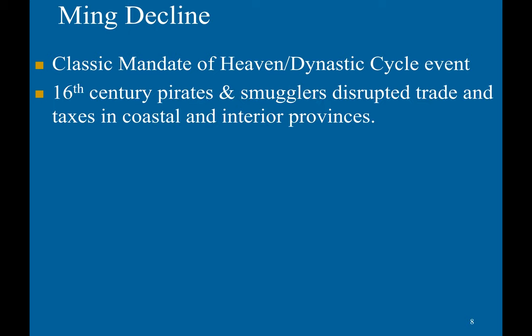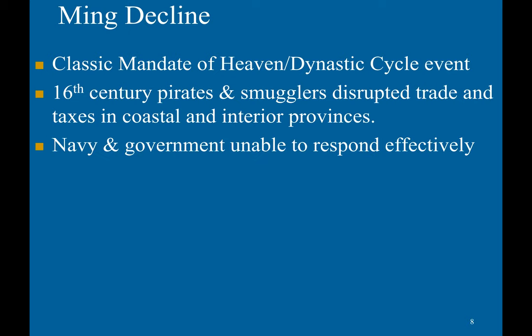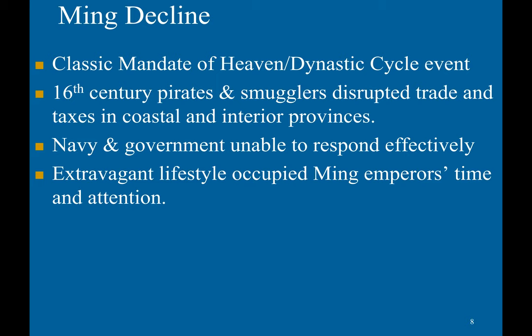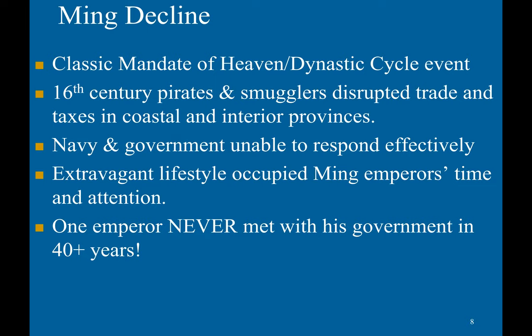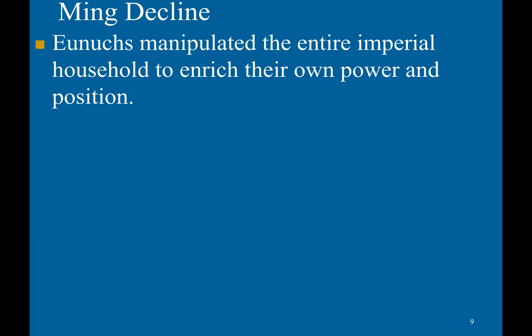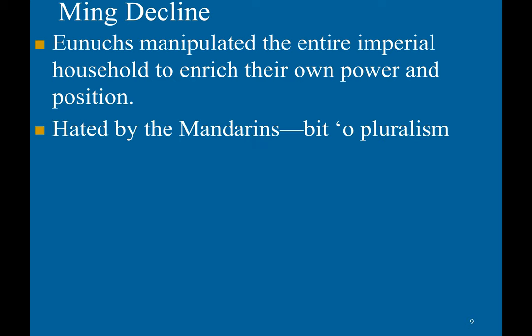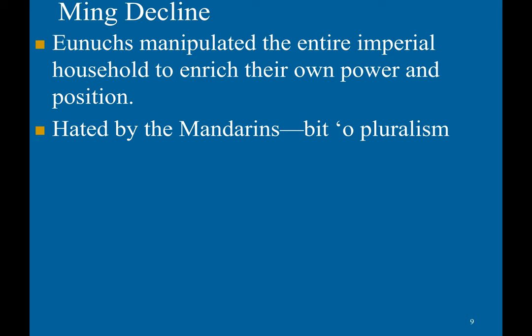Ming decline followed very much a traditional mandate of heaven and dynastic cycle pattern. 16th-century pirates and smugglers disrupted trade and taxes in coastal and interior provinces, and the navy and government were unable to respond effectively. Extravagant lifestyles occupied Ming emperors' time, with one emperor never even meeting with his government in 40-plus years. The eunuchs manipulated the entire imperial household to enrich their own power and position — they were hated by the Mandarins.